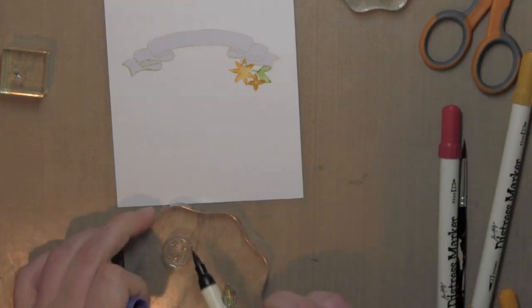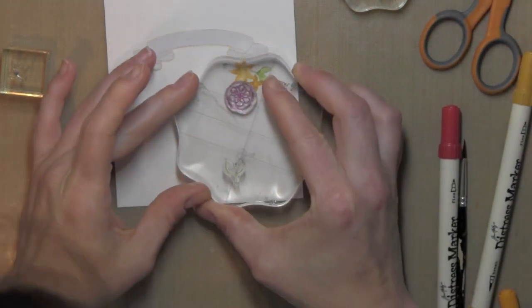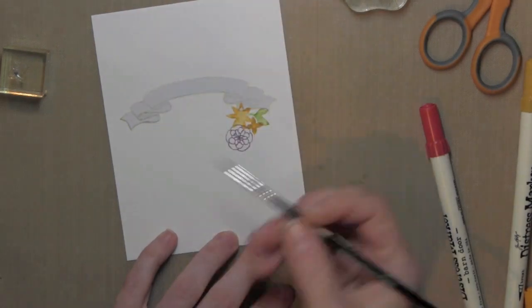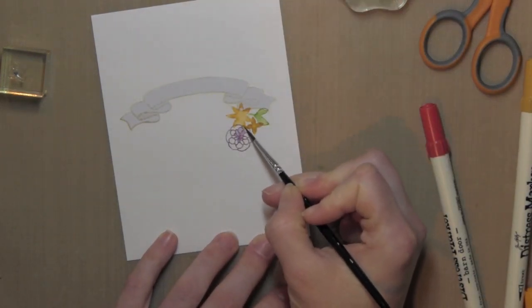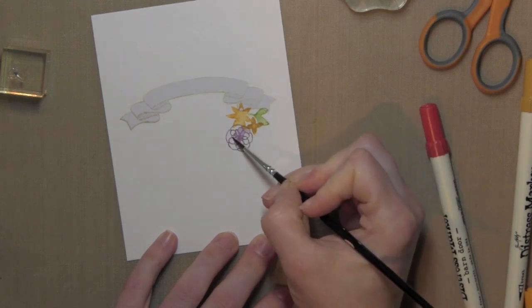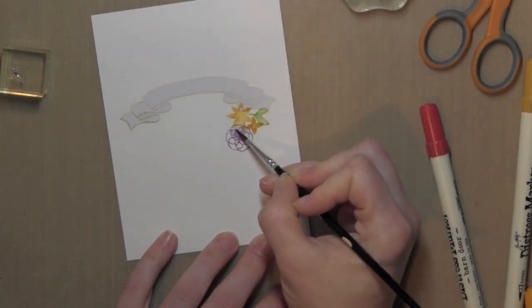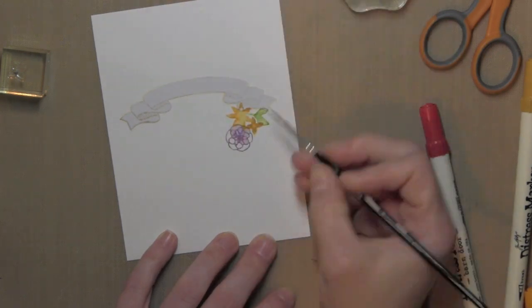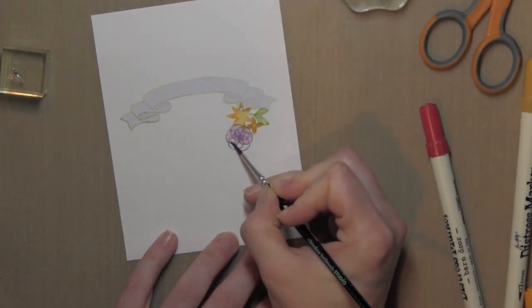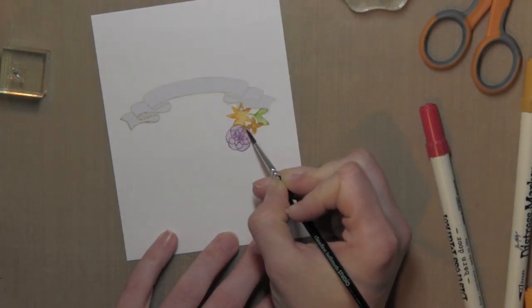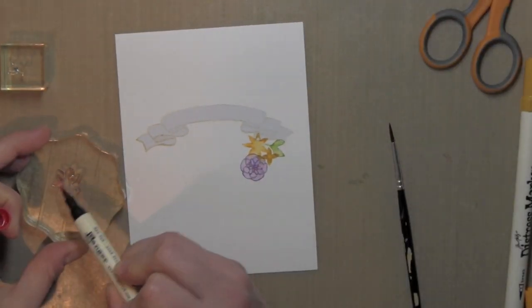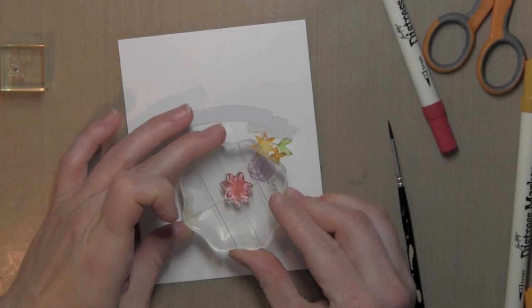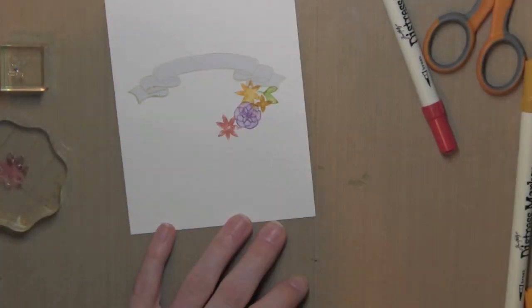That would have been fine but I felt like my florals ended up being so vibrant that the wreath or the banner rather got lost in the floral wreath arrangement. So I stamped it again and colored it in exactly the same way that I did and I cut it with the coordinating die and popped it up with some foam adhesive. So just a slight difference than what I'm actually doing here.